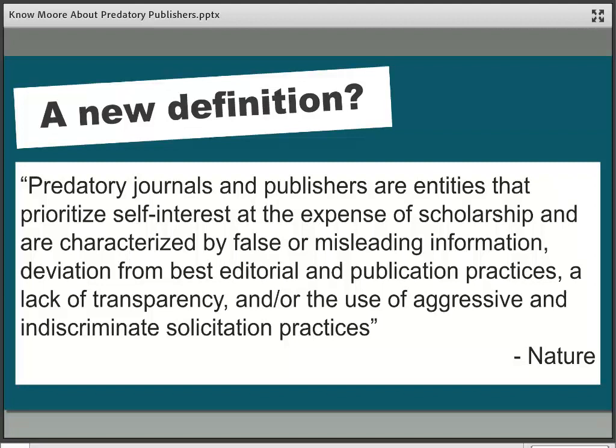The latest definition, which came out a couple of months ago from the journal Nature, is quite long — again, there is no official consensus from all corners of the world about what a predatory publisher is. This definition is the result of three focus groups and 18 hours of discussion amongst multiple people. While it demonstrates some kind of consensus, it also shows there is still some disagreement. It talks about prioritizing self-interest of the publisher at the expense of scholarship — these publishers prioritize making money at the expense of releasing decent scholarship into the world.